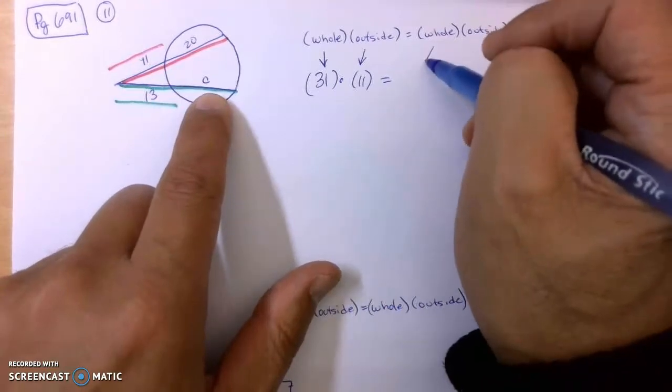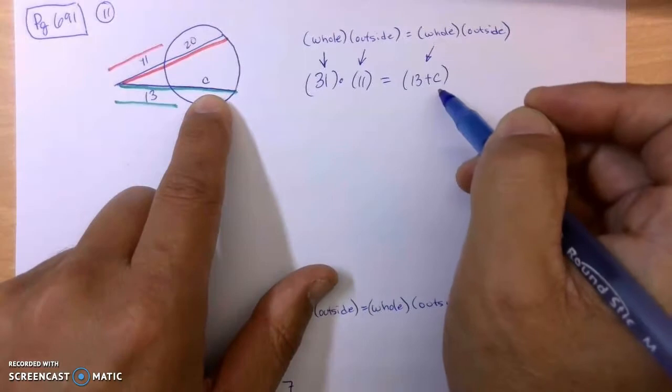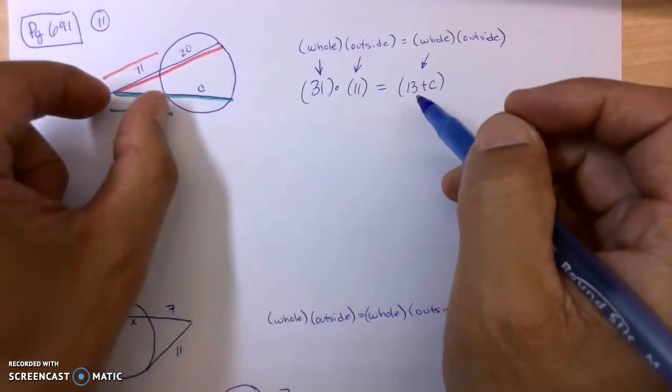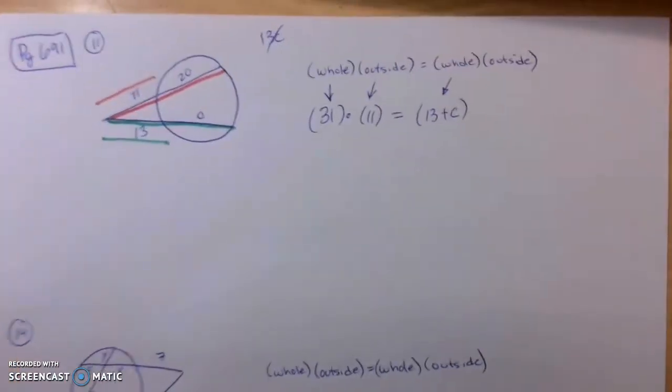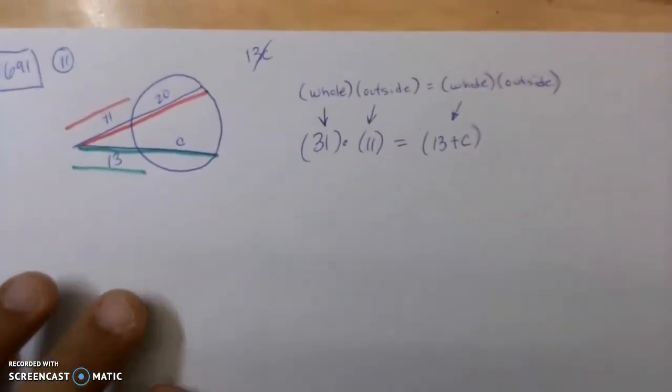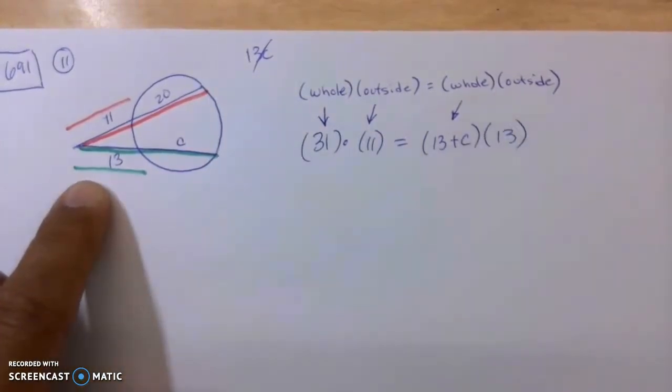And that will equal the whole portion here in green. This is 13, and that's what we're trying to figure out, the variable C, so that's 13 plus C. Don't say multiply by C. It's just 13 plus this C. Again, don't say 13C like you're multiplying. Let me zoom in. And then the outside portion in green is 13.